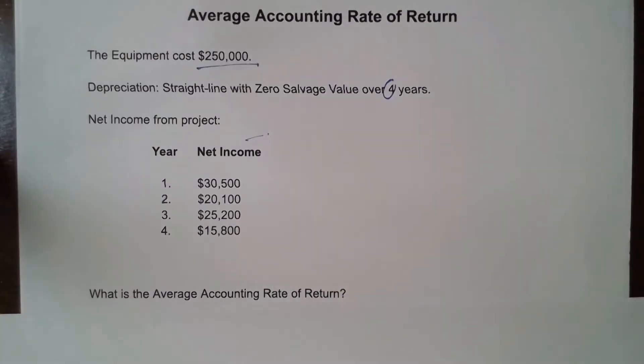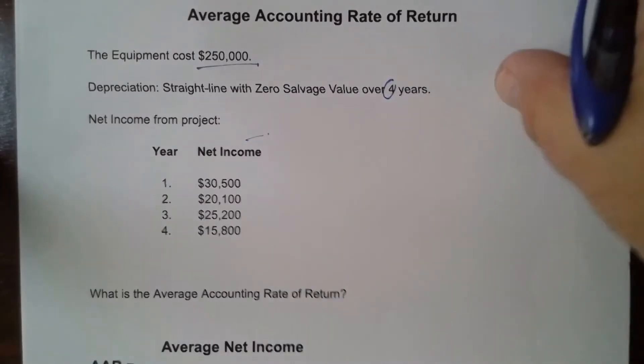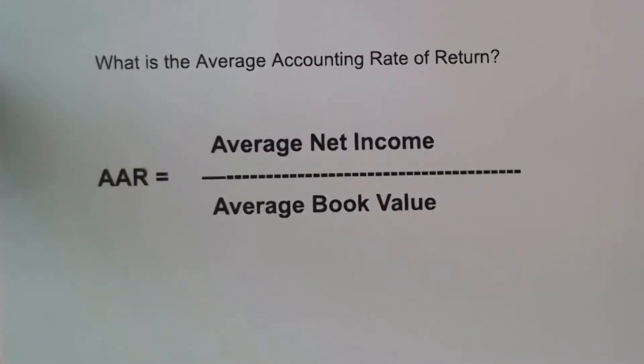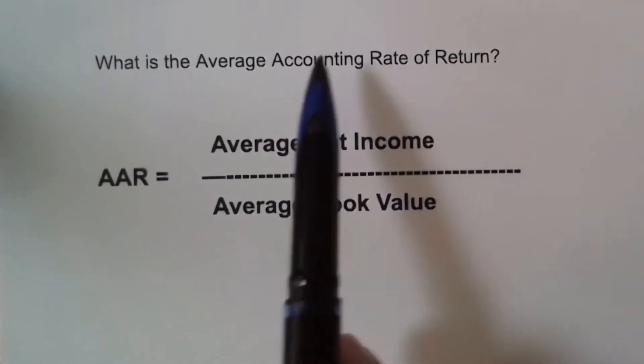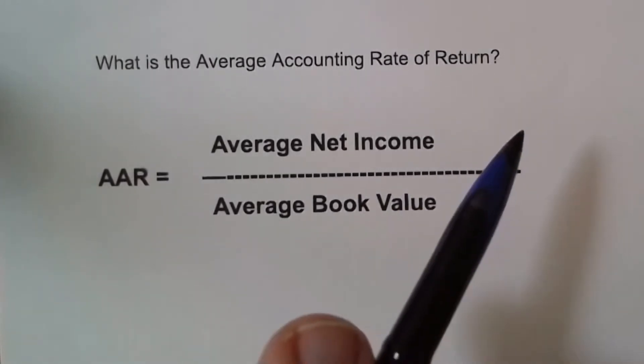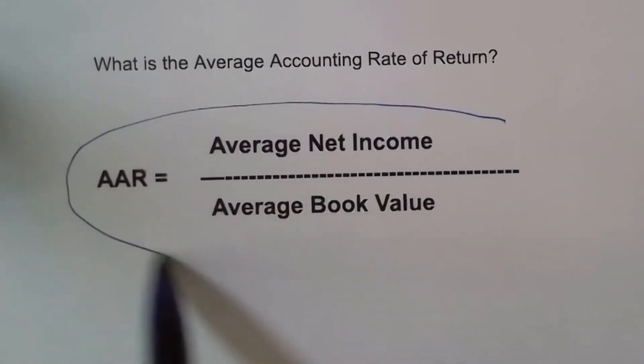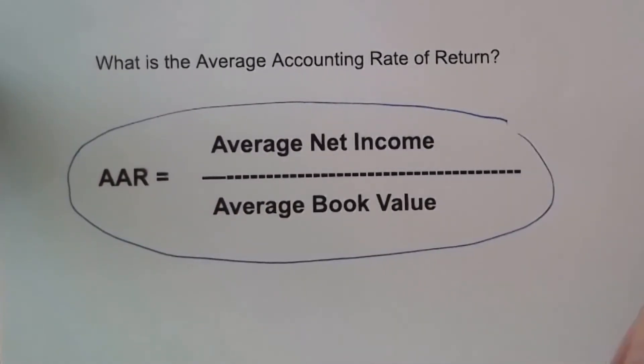If it's asking us what is the average accounting rate of return, we're going to use the formula and pull this up so you can see it. The average accounting rate of return is the average net income over the average book value of the equipment. That's the equation we're going to use. It's pretty simple. Let me show you how to calculate that.